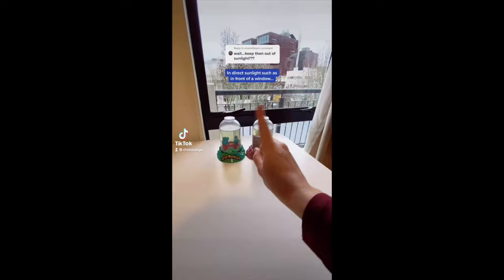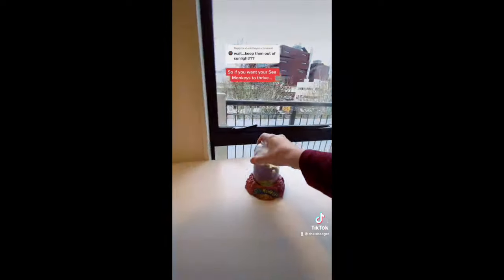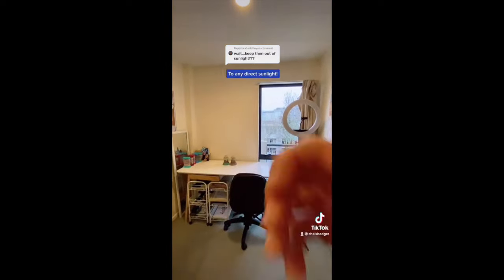Sea monkeys should never be kept in direct sunlight such as in front of a window. So if you want your sea monkeys to thrive, put them somewhere where they get natural light but they're not exposed to any direct sunlight.